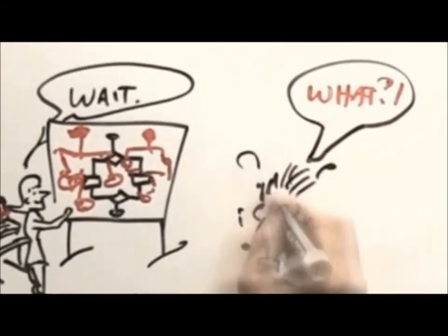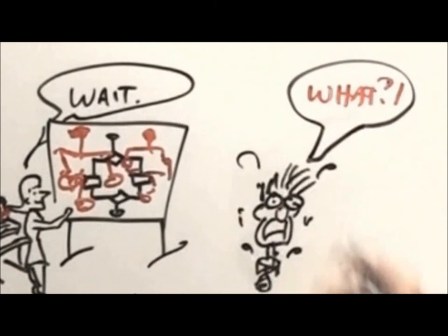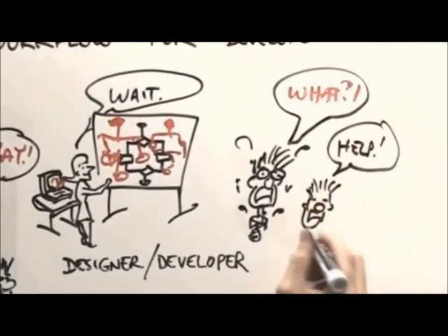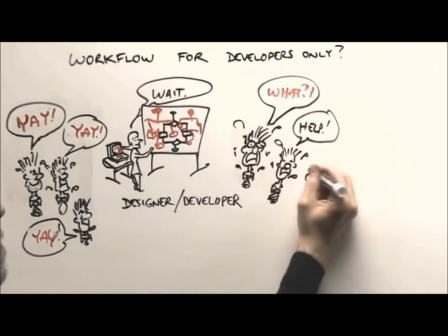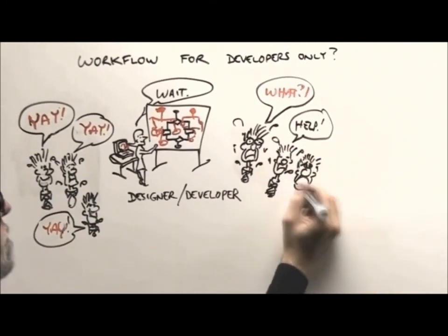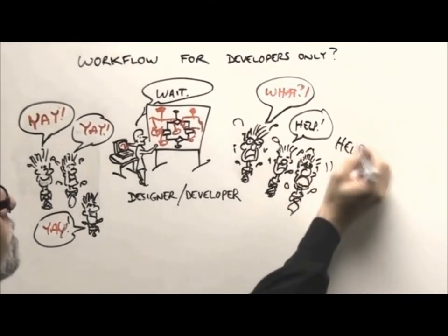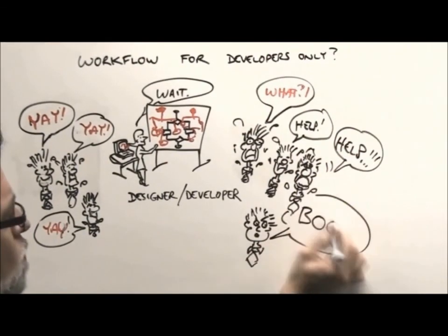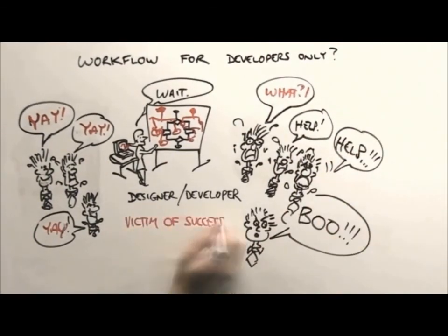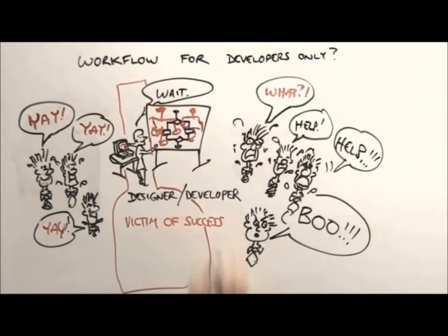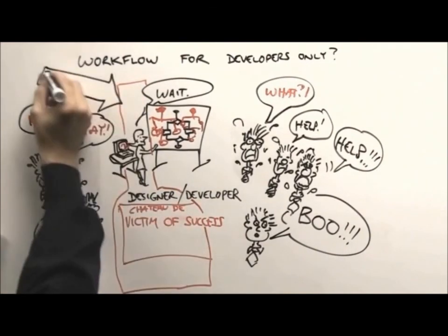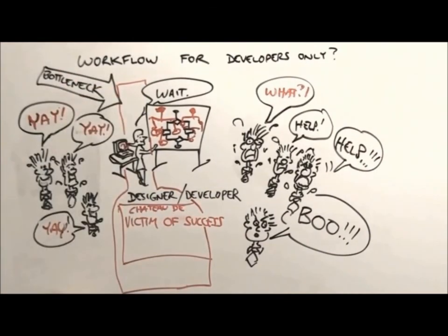You can imagine what the reaction will be when faced with that. You can also imagine what the succession of reactions will be as more and more people have to wait. There's an eventual revolt and developers become victims of their own success, and your crew of developers effectively become a bottleneck.